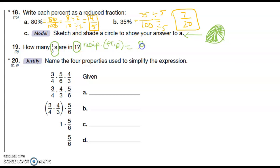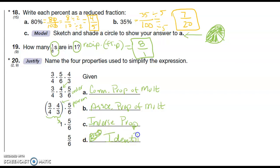Number 20: Name the four properties used to simplify this expression. So we're given 3/4 times 5/6 times 4/3. We move 4/3 so it's an order change, which is the commutative property of multiplication. And then we add parentheses, parentheses are associative. And then when we multiply a fraction by its reciprocal we get one, and that's the inverse property. And then this is just one times 5/6. Oh no, this is identity, my bad, I got it. Identity property of multiplication because anything times one is that thing.